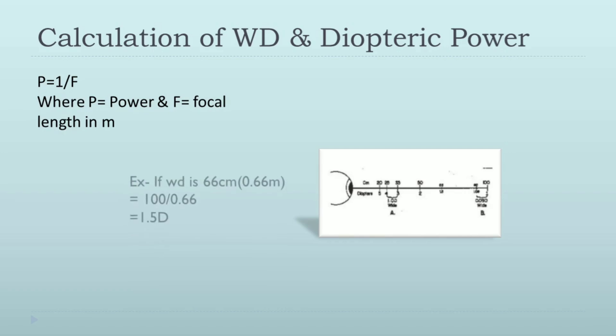If you take another example of 50 centimeters, it converts to about 2 diopters. As you can see in these pictures, if you go closer to the patient, your dioptric power will increase. Your dioptric power depends on your working distance—the closer you go, the higher the dioptric power.